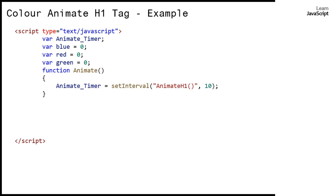The animate function calls the setInterval JavaScript function, which takes two parameters. The first parameter is animateH1 — a function that takes responsibility for animating the h1 tag. The milliseconds are set to 10, meaning in one second animateH1 will be called 100 times. In reality we may not know exactly how quickly the function executes, but we are asking setInterval to call animateH1 100 times per second.